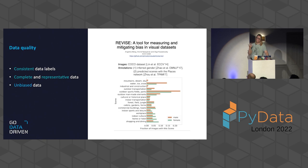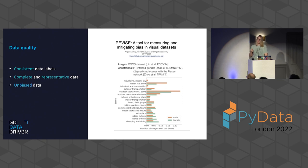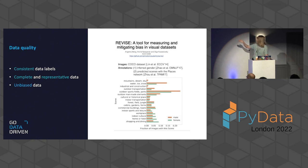Luckily, part of data-centric AI is developing tools that help detect these biases. Take for example Revise, a tool presented at the data-centric AI workshop at NeurIPS. Not only does it provide possible inequalities in your image dataset, but it's also very actionable — you can see what kind of data you're missing, guiding your data collection. That also means data collection should be an iterative process.